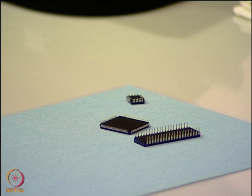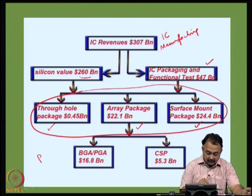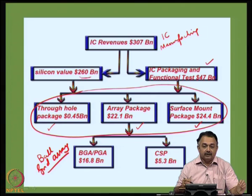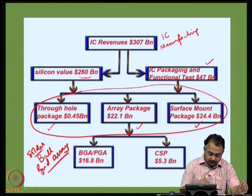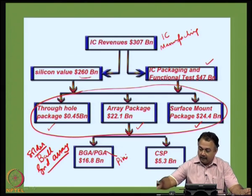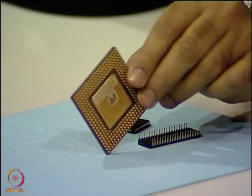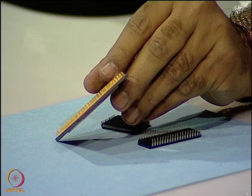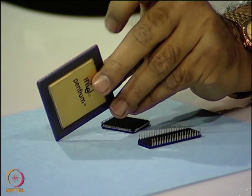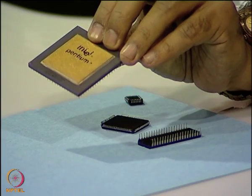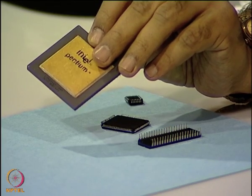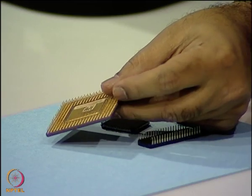The area array package means the entire area under the die is being utilized for creating the IOs. Under area array packages, we have ball grid array — BGA — where the interconnection of the package is in the form of solder balls. We also have pin grid array. Here you can see a Pentium processor where the IOs at the bottom are in the form of pins. This is an Intel Pentium processor — completely packaged — with the bare die interconnected and the IOs in the form of pins.